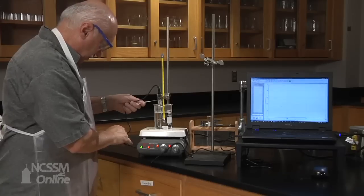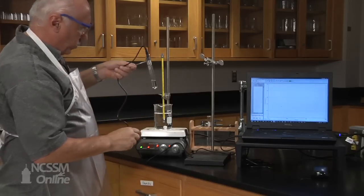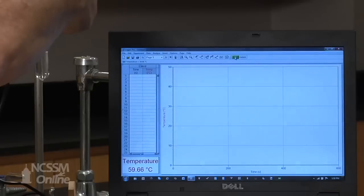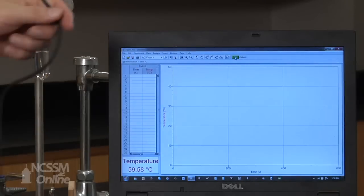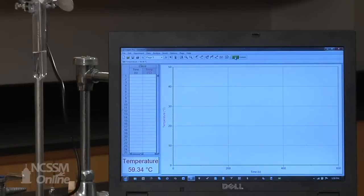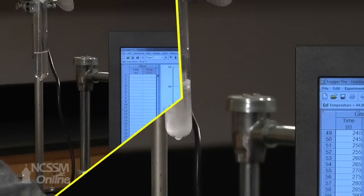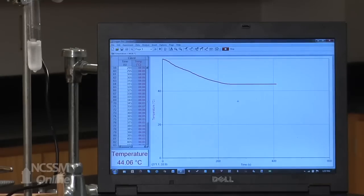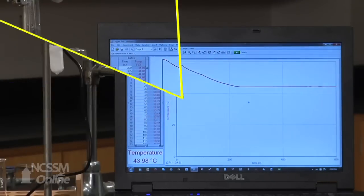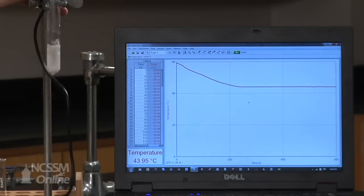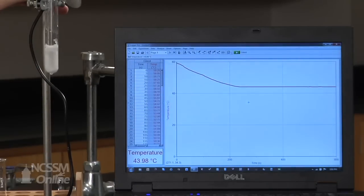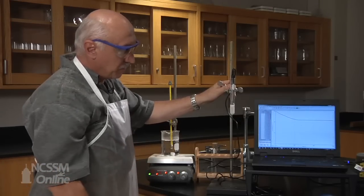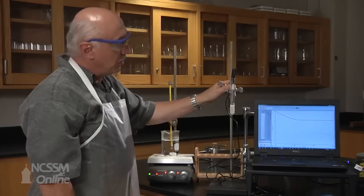Now the lauric acid is fully melted, we're going to place it back onto the stand and we're going to begin collecting data with Logger Pro. And now we have come to the end of our run. We have collected all the data possible. I will save this Logger Pro file and make the data available to you so that you can derive the freezing point of lauric acid from it.